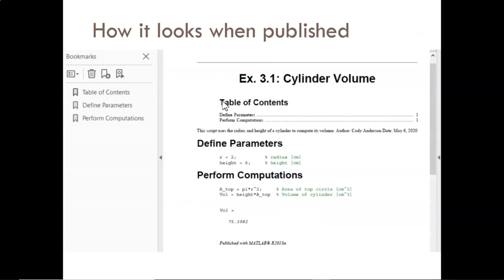Here's what this final code looks like when published to PDF. To review the steps to publish, please watch again the publishing video from day one. Notice the nice features. First, the section headers appear in bold and also in the table of contents. All of the other comments appear, as well as the actual code, and at the bottom we see the output of the code, in this case the volume that was displayed to the command window.